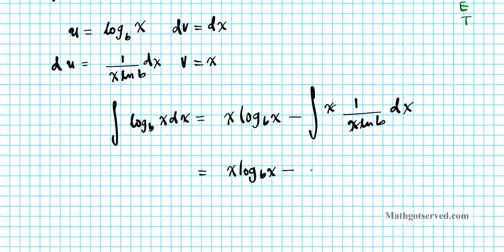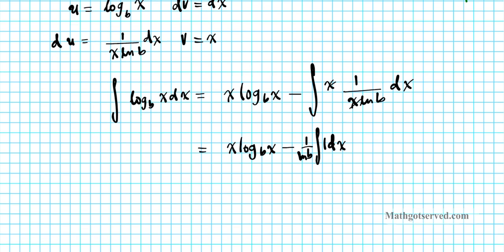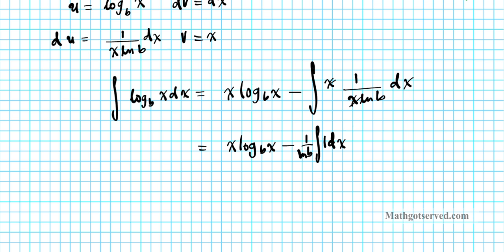Since ln b is a constant, 1 over ln b can be factored out. We have 1 over ln b times the integral of dx. The antiderivative of 1 is just x. So this becomes x log base b of x minus x over the natural logarithm of b.